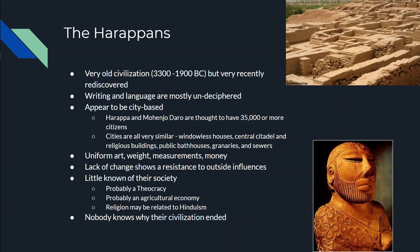Nobody knows what happened to the Harappans — this is one of the things we are still trying to research. Some of the suggestions include deforestation, which could have led to soil erosion or desertification, a drying out. There could have been a decline in agricultural production, or it could have been a natural disaster. We just don't know. But whatever it was, around 1900 BC the evidence of the Harappans starts to disappear, and our best guess is that by 1500 BC the Harappans are completely gone.